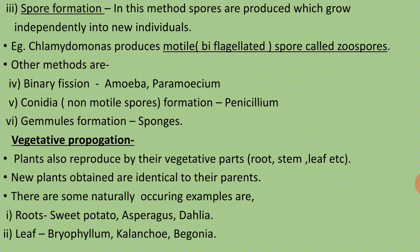Now we will see vegetative propagation. Plants can also reproduce by their vegetative parts. Vegetative parts are the parts helpful in the growth of the plant — such as root, stem, and leaf. The flower is the reproductive part. When these vegetative parts — root, stem, and leaf — are used for reproduction, the method is called vegetative propagation.